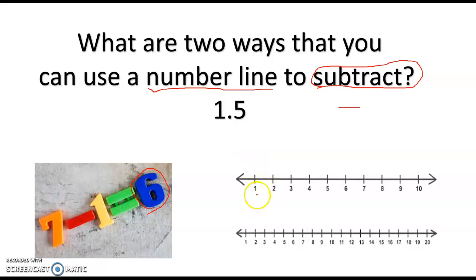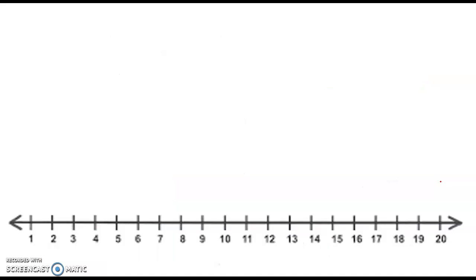This is a number line. A number line starts with the smallest number and goes in order and gets higher. So let's see how we can subtract on a number line.